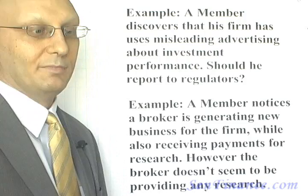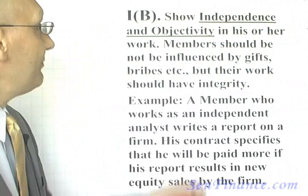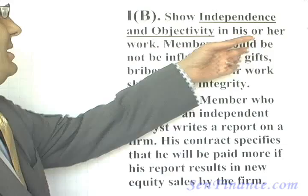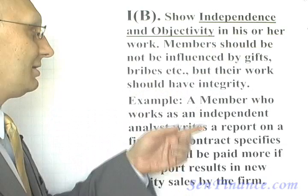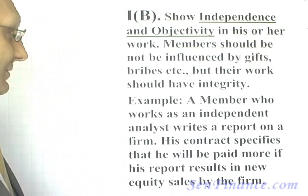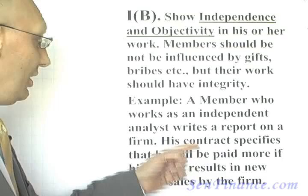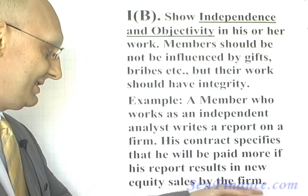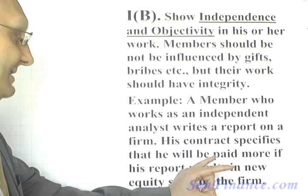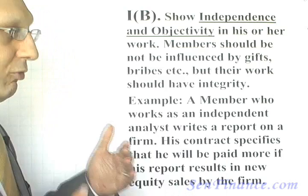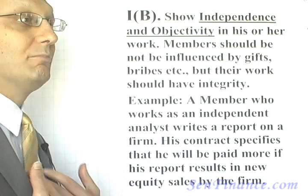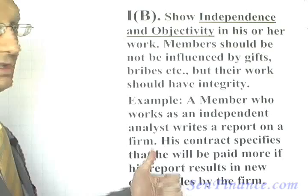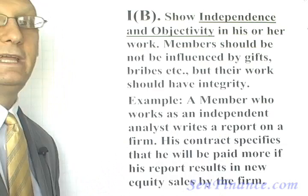With respect to Independence and Objectivity, members should not be influenced by gifts, bribes, or similar incentives — their work must have integrity. Here's a great example: a member who works as a supposedly independent analyst writes a report on a firm, and his contract specifies he will be paid more if his report results in new equity sales. This gives him an incentive to write a favorable recommendation. He must disclose the payment terms of the contract.